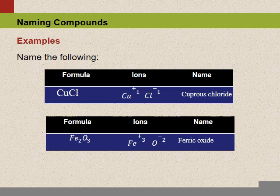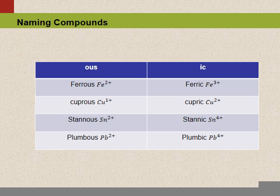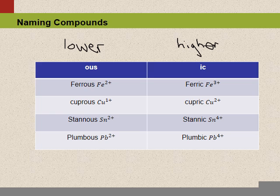You're probably wondering how you can tell the two apart. Looking back at the chart, there's an easy way to remember this. When we're talking about the 'ous' version, we're talking about the lower of the two charges. When we're talking about the 'ic' version, we're talking about the higher of the two charges. An easy memory trick: 'ous' has an O in it and so does 'lower'; 'ic' has an I in it and so does 'higher.' So if you have iron three-plus, three is higher than two, so we're talking about the 'ic' version.